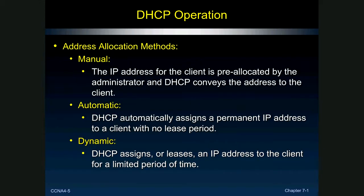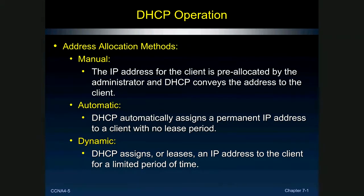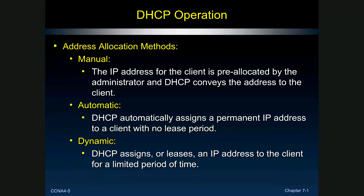There are three methods of DHCP operation. Manual: the IP address is pre-allocated by the administrator — but nobody really uses this; if you want a static address you just configure it directly. Automatic: DHCP assigns a permanent IP address with no lease period — nobody uses this either. The real choice is: check 'Obtain IP address automatically' for desktop PCs, or don't use DHCP at all for printers, servers, switches, and routers, which get statically configured. Desktop PCs get replaced every three or four years, so dynamic is fine.